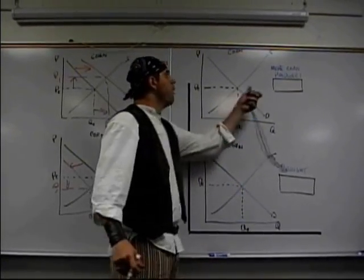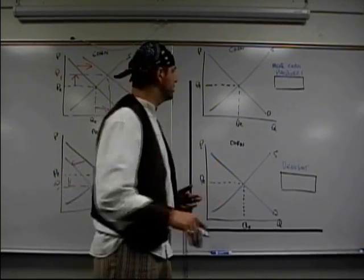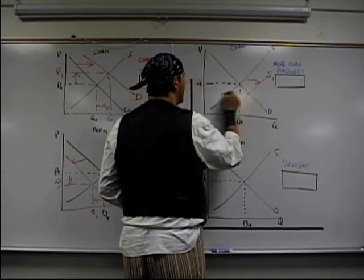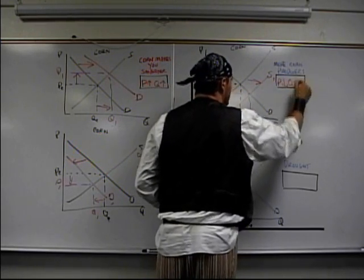Over here, supply. More corn producers. That's going to affect production, not the demand. It's not going to affect consumers, but there's going to be more production. So that's an increased supply, shift to the right. You can see P1 and Q1: price goes down, quantity goes up.